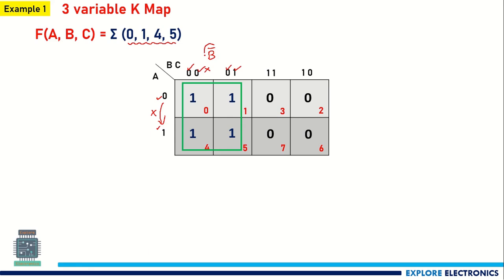So B̄ is the expression for this particular group, and this K-map has a single group. The group expression is B̄, so B̄ is the simplified expression for this example.